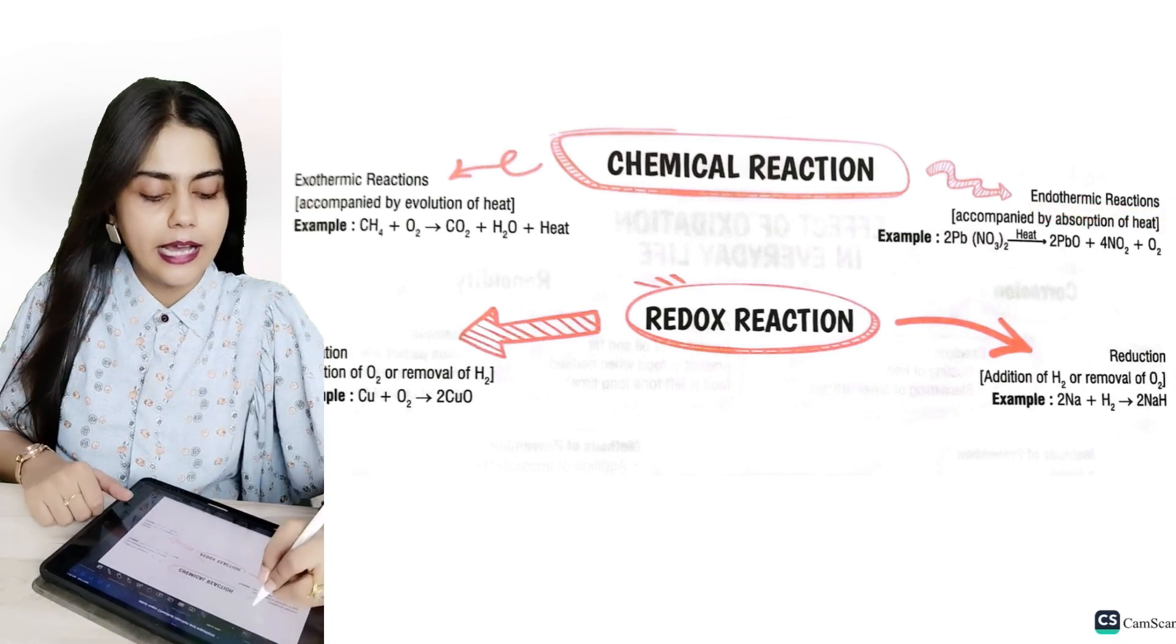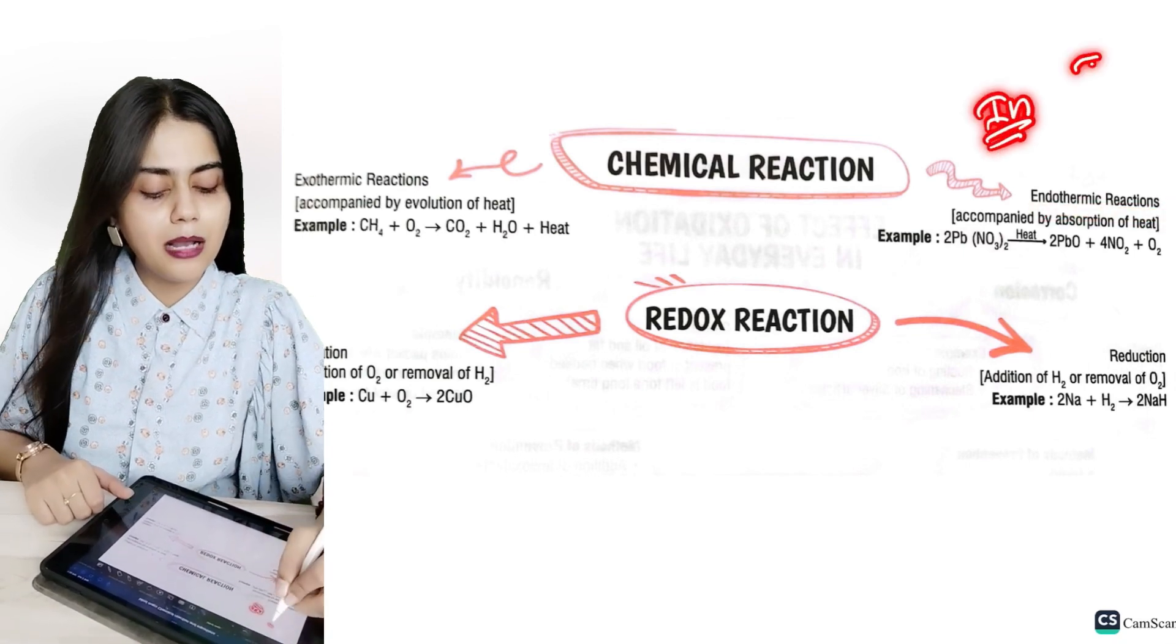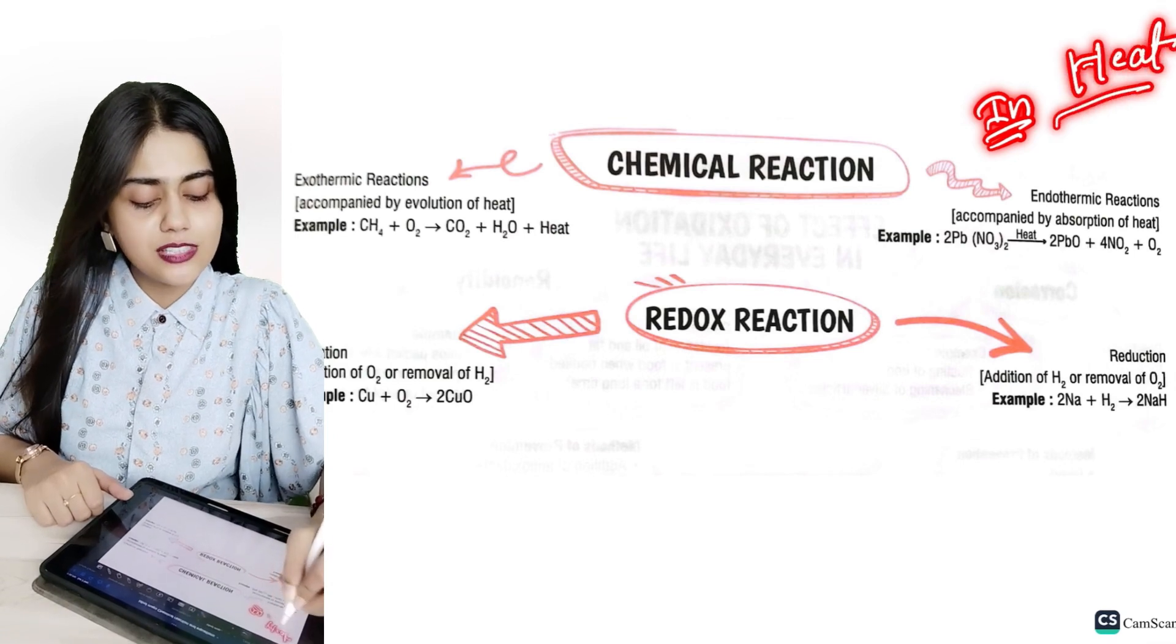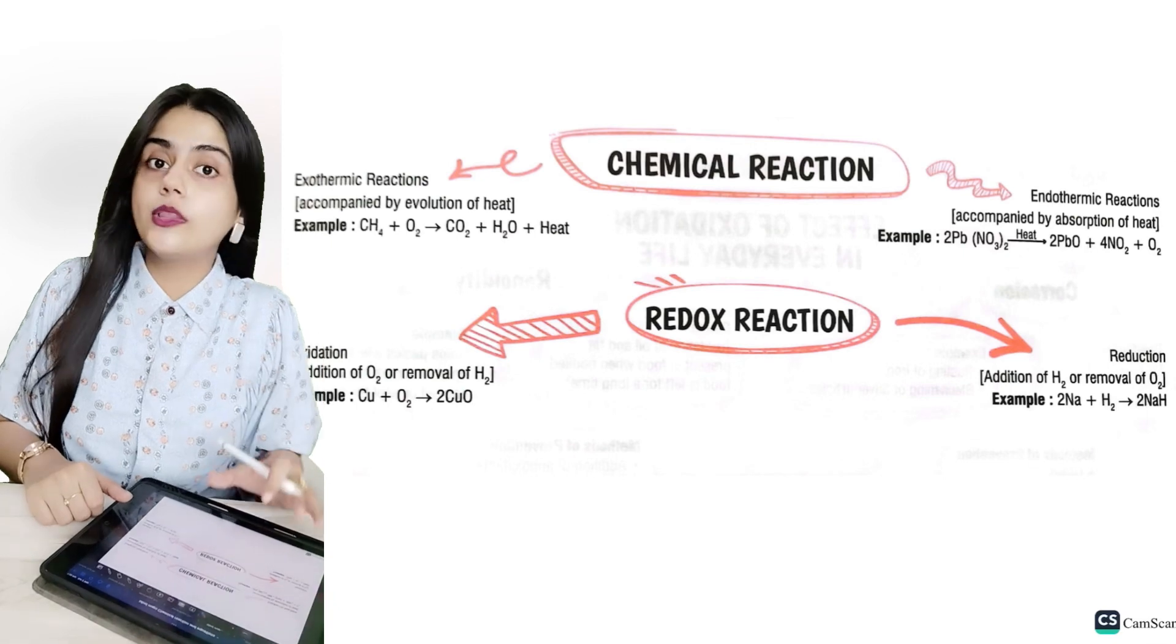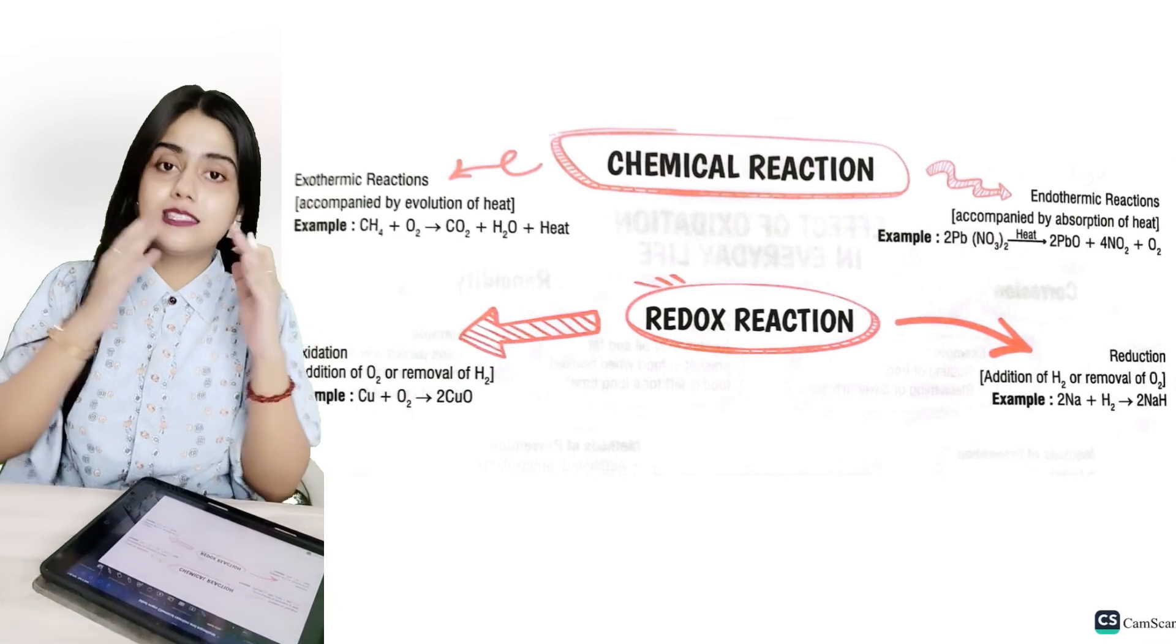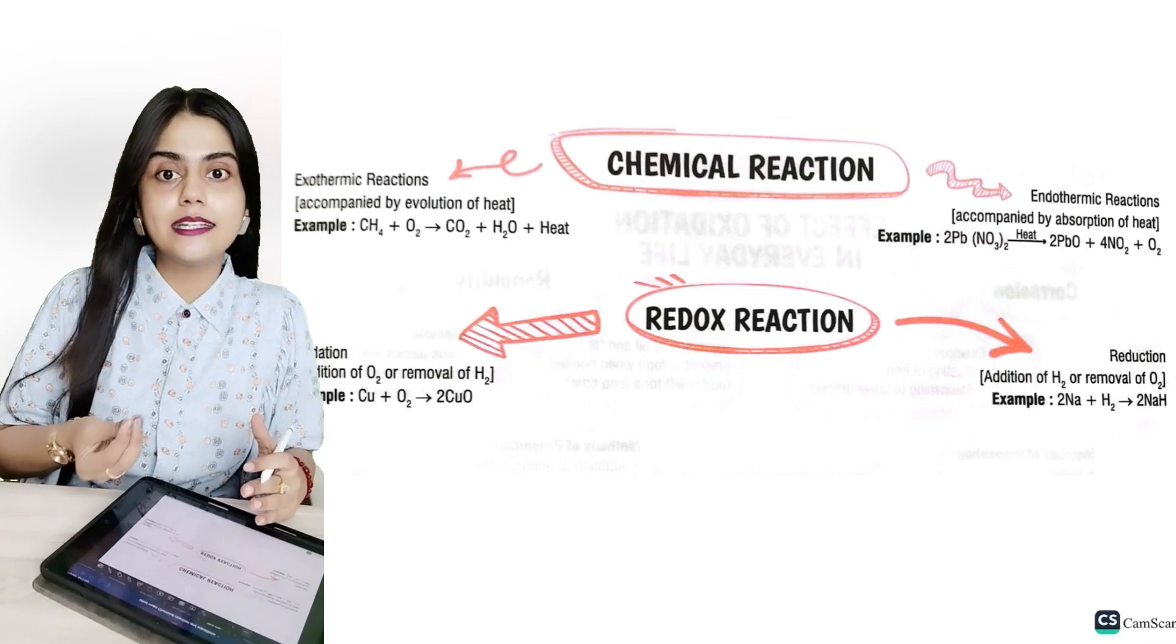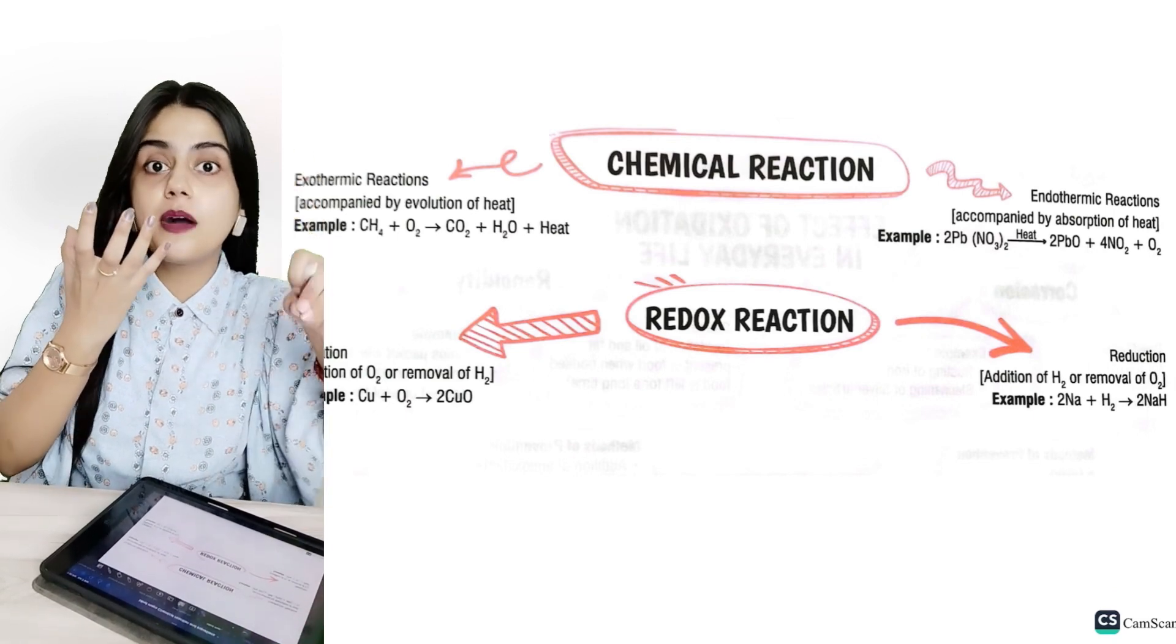Endothermic reaction. Endo means in. This means that we need our heat. This reaction which we need to perform our reaction, so we have the same endothermic reaction. You can understand that the heat is coming out and we give heat to the reaction to perform.